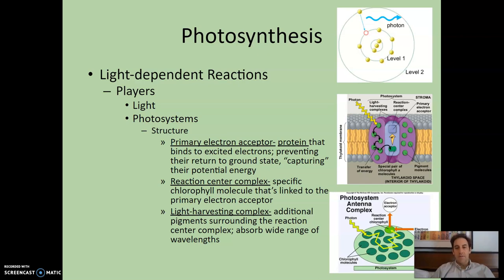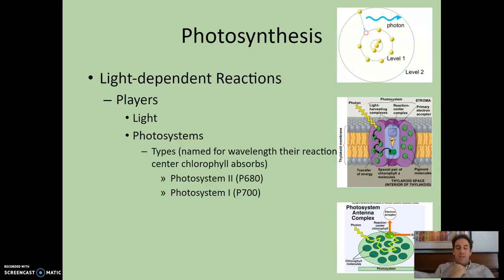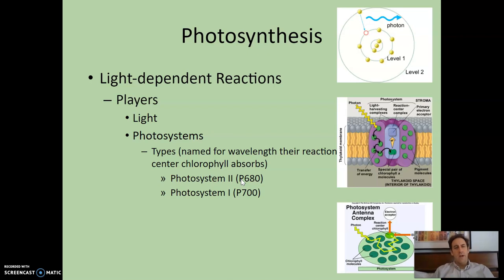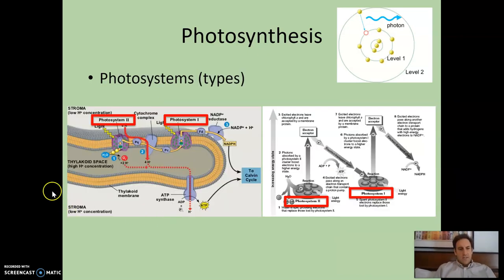There is also a light-harvesting complex — all the area around the reaction center. These are additional pigments surrounding the reaction center complex, and by having many pigments, we can absorb a wider range of wavelengths. Note that there are two types of photosystems, named for the wavelength their reaction center chlorophyll absorbs. Photosystem 2 is P680 — it absorbs 680 nanometers. Photosystem 1 absorbs 700 nanometers. They are named in order of discovery, but in the process, photosystem 2 actually comes before photosystem 1.